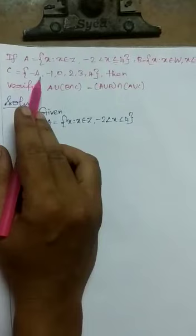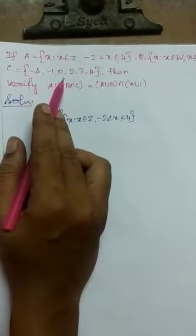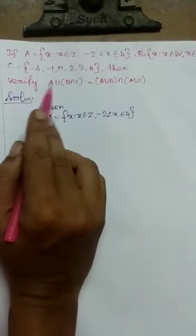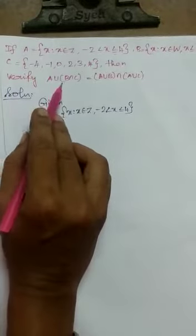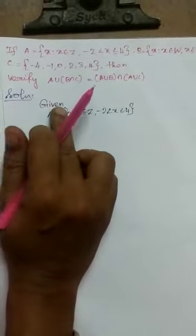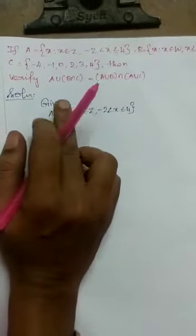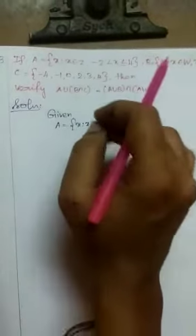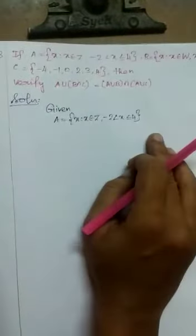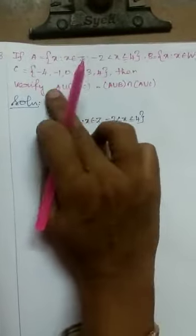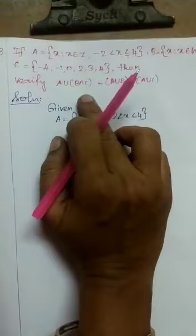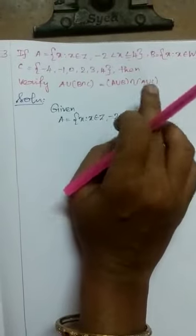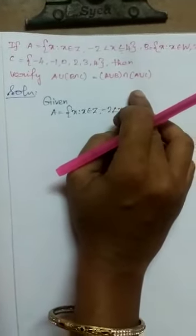We need to verify the distributive property using the given sets A and B. The distributive property is one property we can verify. If we can verify the property, then we can finalize the property.